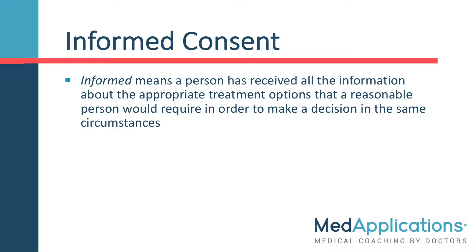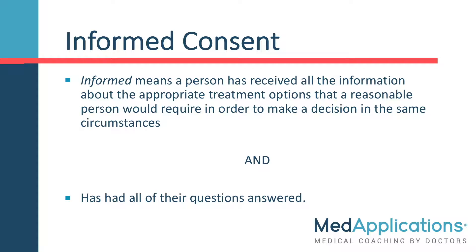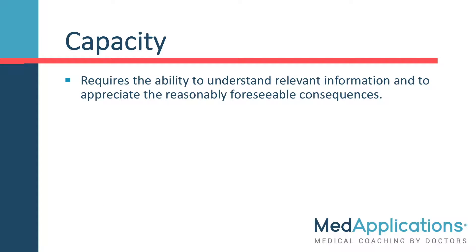To protect the right of autonomy, medical treatment may only be administered if there is informed consent. Informed means a person has received all the information that a reasonable person would require in order to make a decision in the same circumstances, and that person needs to have had all of their questions answered. A person can only give informed consent if they have capacity to do so. Capacity requires the ability to understand relevant information and to appreciate the reasonably foreseeable consequences.